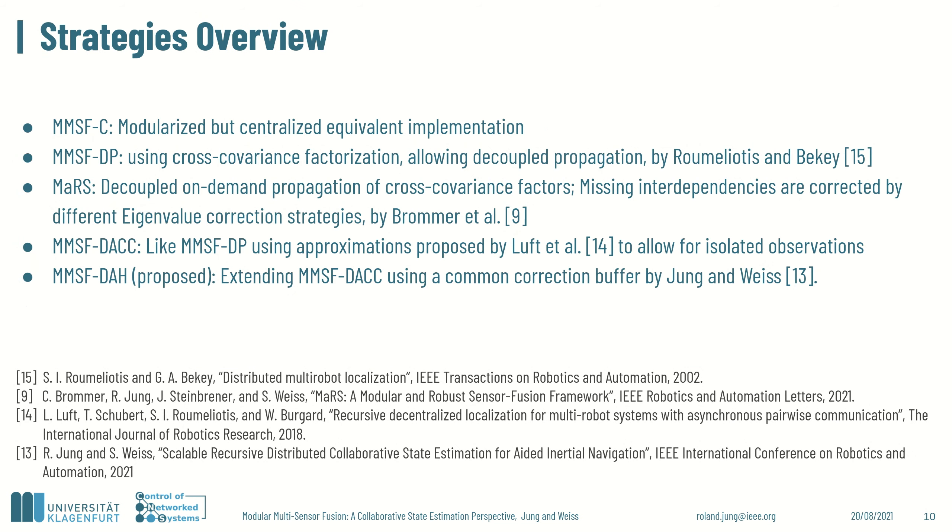In total, weported three different strategies from collaborative state estimation as well as a state-of-the-art native MMSF approach called MARS. MMSF-C is a modularized but centralized equivalent implementation that performs a statistically optimal fusion. Due to the modularity, the implementation is not as efficient as a corresponding Kalman filter operating on a static full state. MMSF-DP is using the cross-covariance factorization as proposed by Roumeliotis and Bekey and allows for decoupled state propagation. MARS is our native robust and modular multisensor fusion approach proposed by Brommer et al. that compensates missing interdependencies between sensors using different eigenvalue correction strategies. MMSF-DACC is like MMSF-DP but using approximations for observations proposed by Luft et al. allowing for isolated updates. MMSF-DAH extends MMSF-DACC by using a common buffer for correction terms.